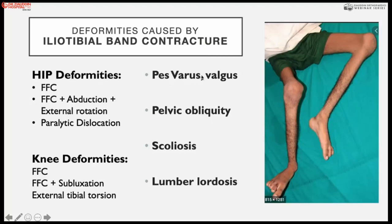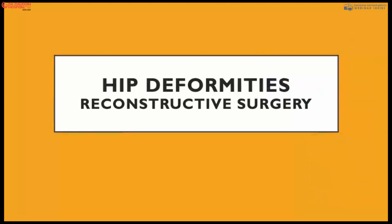Hip abduction contracture with external rotation, paralytic scoliosis, knee flexion contracture, knee subluxation, and external tibial torsion are all produced because of the tight iliotibial tract, postural maintenance, and strong hamstrings particularly the biceps. Next we discuss how these contractures can be released and deformity reduced so that the patient may walk normally with or without braces.